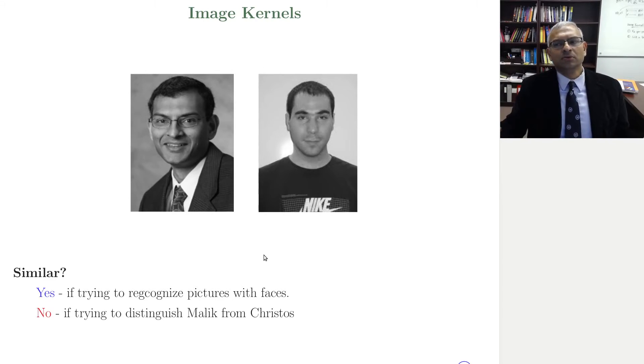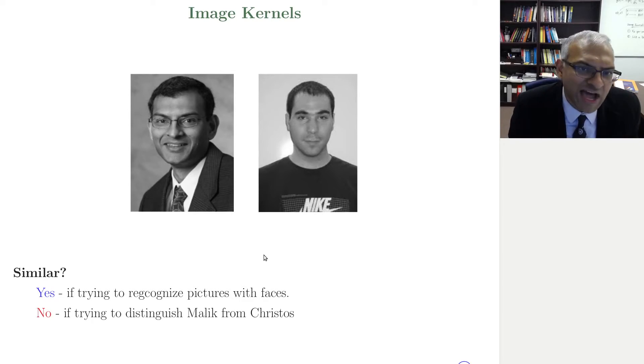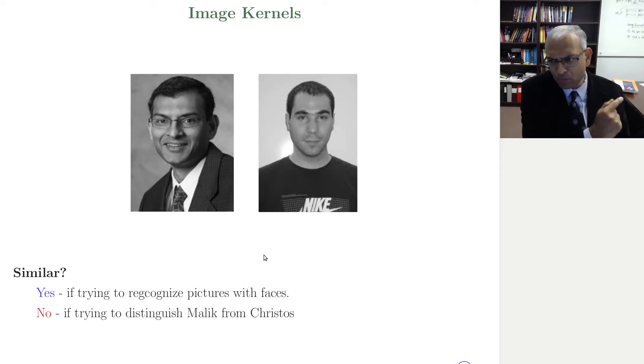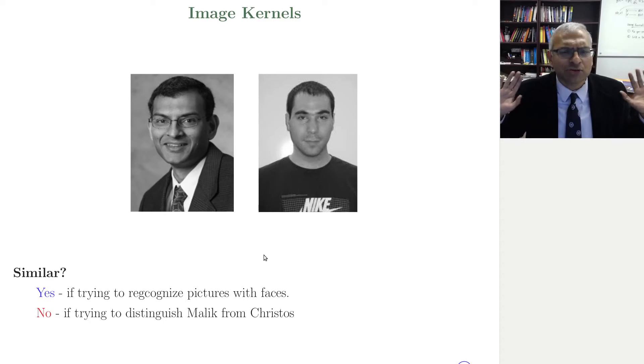So whatever kernel you produce must extract the relevant features and output the right measure of similarity that would say that these have a high level of similarity, because there are faces in each of these pictures. And once you have that kernel, boom, you can run the support vector machinery, the kernel machinery, get the optimal classifier, get the support vectors, the important data points, and ready to classify.